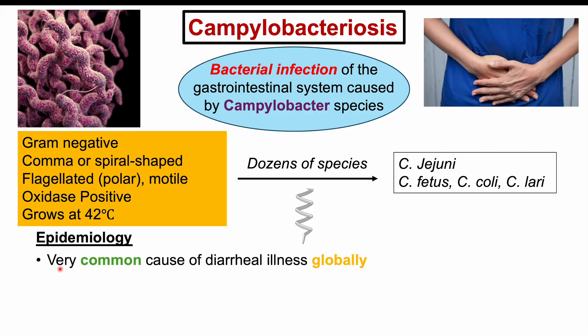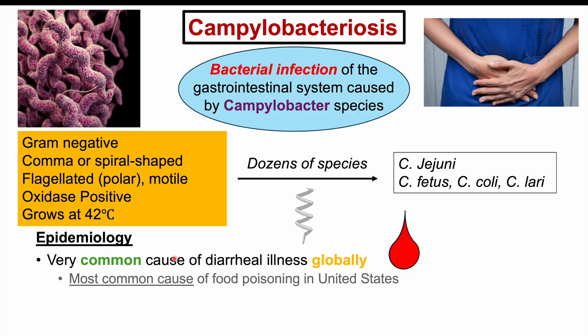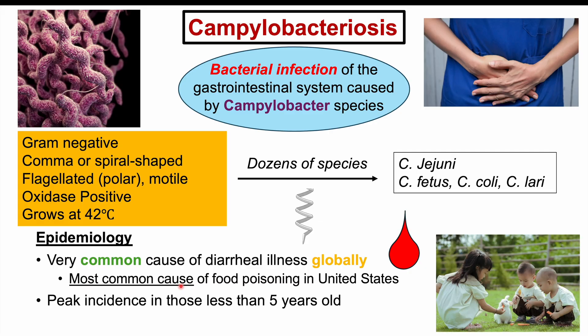Campylobacter infections are a very common cause of diarrheal illness globally, especially bloody diarrhea. In fact, Campylobacter infections are the most common cause of food poisoning in the United States, with anywhere from 1.3 to 1.5 million cases per year — compared to Salmonella infections, which are roughly 1 million per year. The peak incidence is in those less than five years of age.